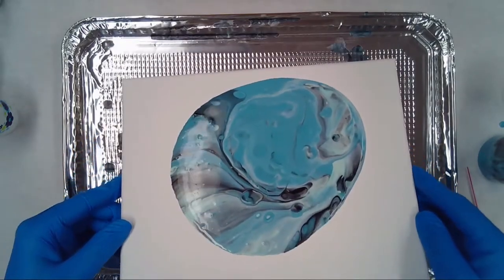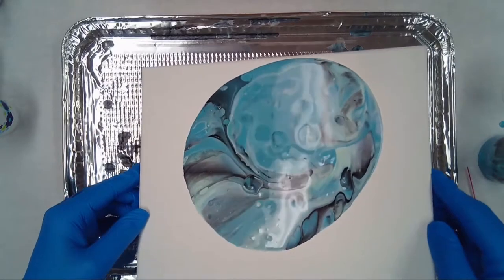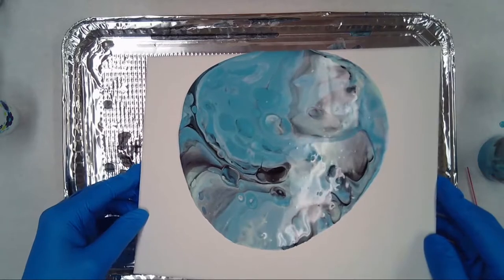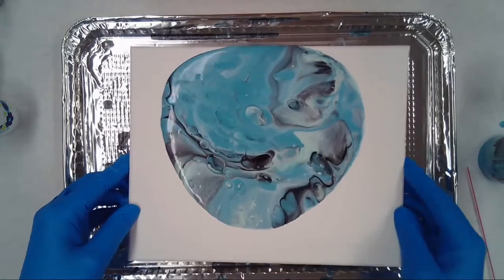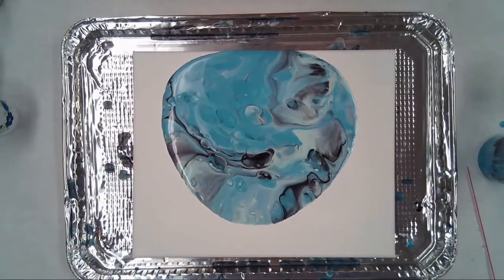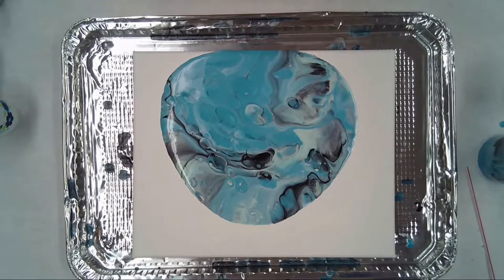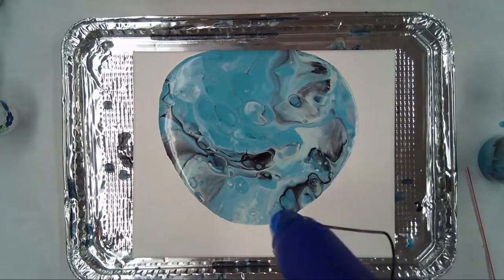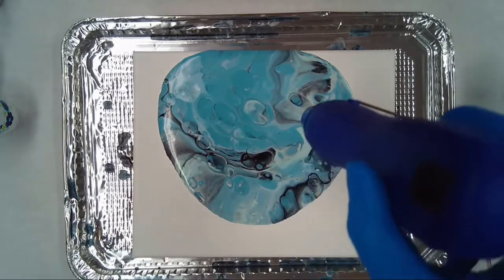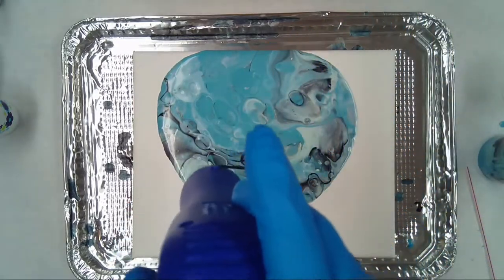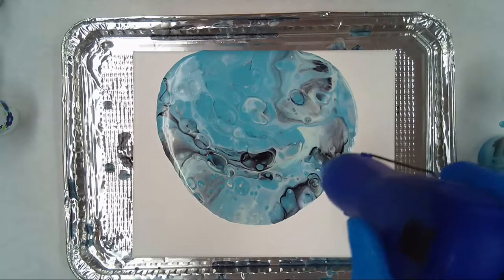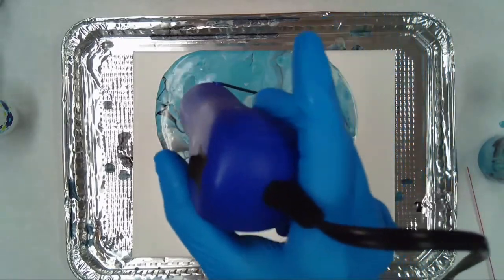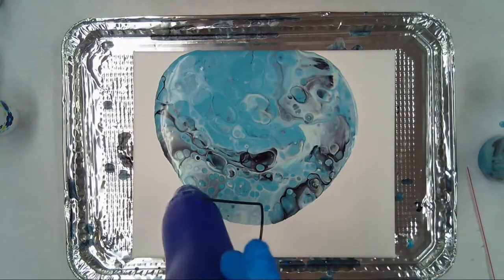So you can see this one's definitely a lot bluer than the last one. I can see some of those cells in there already. Actually, I'm going to... This is a heat gun. It's going to help some of those cells come out. You can see them starting to pop. I'm going to do this again later on.